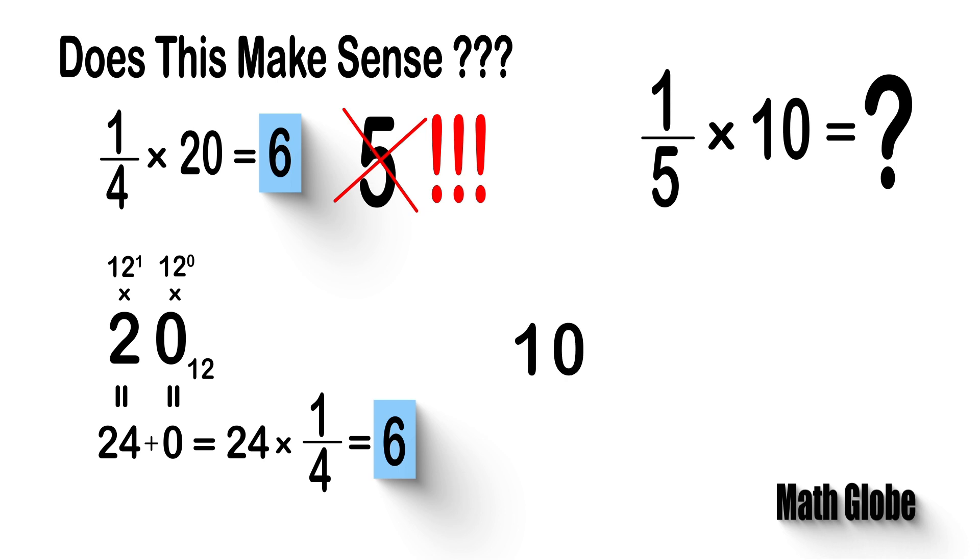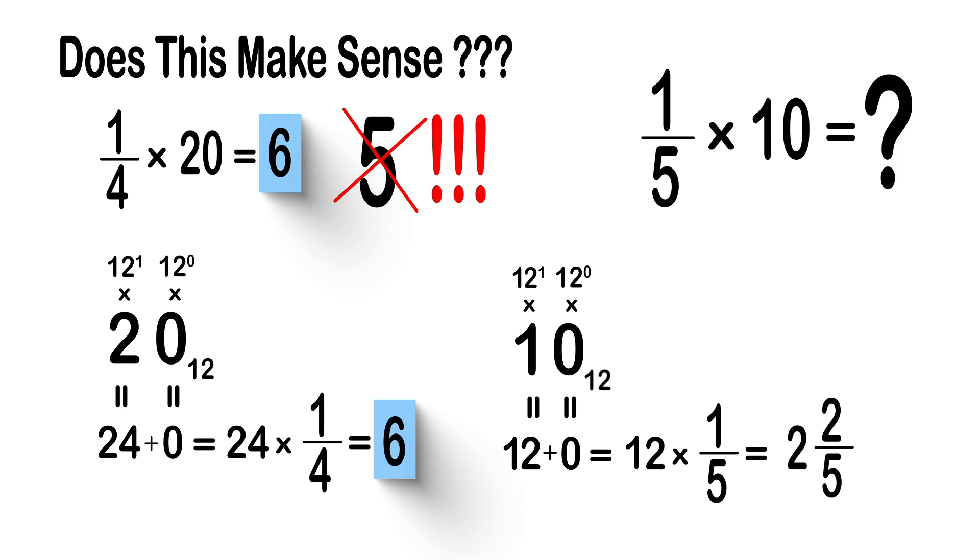Next, if we write 10 in base 12, it will be equal to 12. Then, when we multiply one-fifth by 12, the result of this multiplication equals the following fraction. And this is the solution.